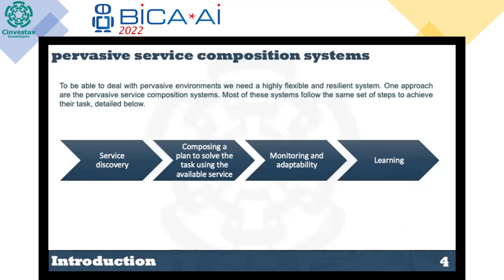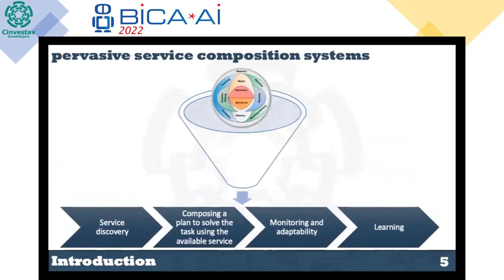Pervasive systems are systems which are in constant change. To deal with this kind of environment, we need a highly resilient and flexible system. One approach is service composition systems, which some students with Dr. Felix are working on. Most of those systems follow the same set of steps, shown in the slide. Some talk has been made about the possibility of using a cognitive architecture as this composition system.